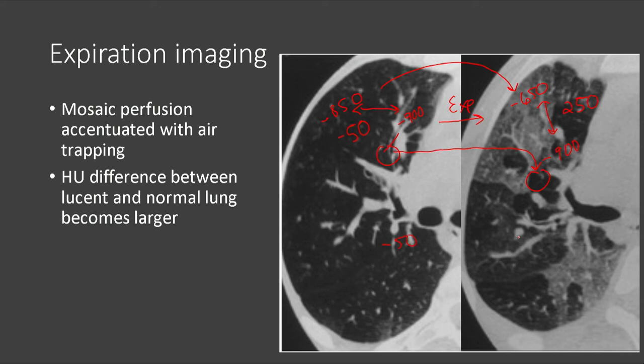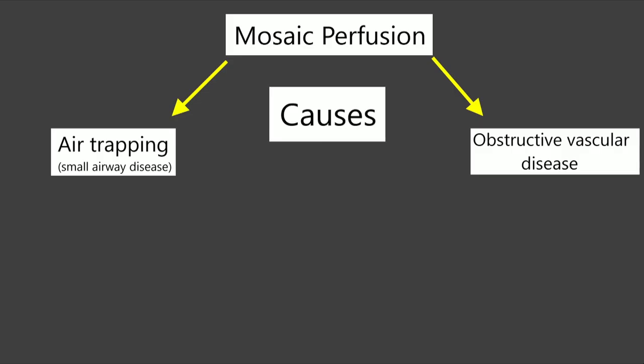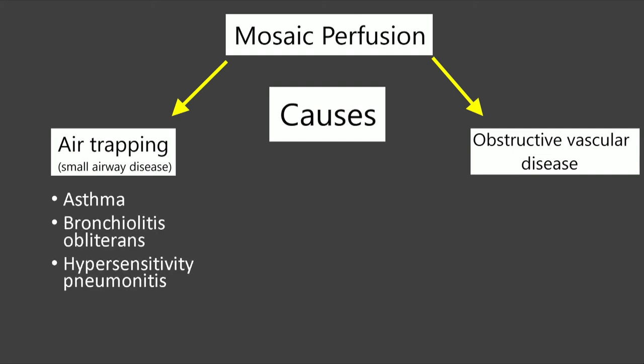Finally, the causes of mosaic perfusion: under air trapping, the big three are asthma, bronchiolitis obliterans, and hypersensitivity pneumonitis. Under obstructive vascular disease, the main cause is chronic pulmonary embolic disease, followed by any cause of pulmonary arterial hypertension, including idiopathic pulmonary arterial hypertension.